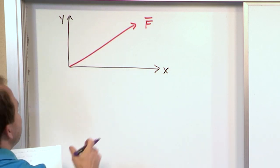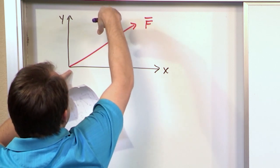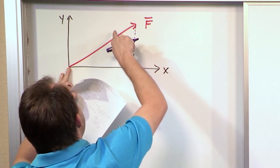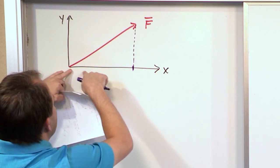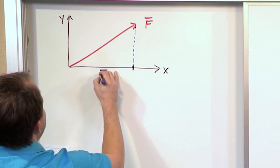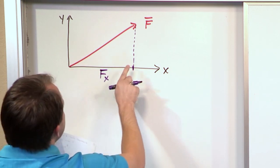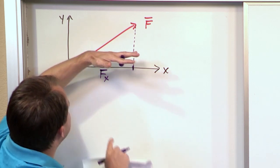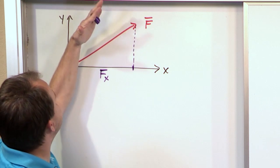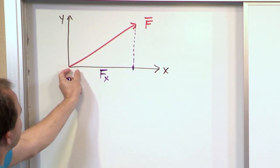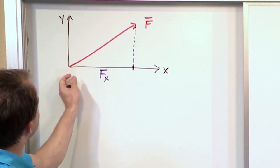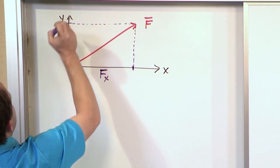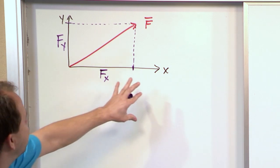I cannot stress how important it is to visualize vectors in terms of components. When you see an angled vector, you need to think of it as a pulling force along x and a pulling force along y. If you shine a flashlight above the vector and it cast a shadow down on the x-axis, that shadow would be the x-component — we call that F sub x. Likewise, projecting onto the y-axis gives us F sub y. That's why we label the axes this way.